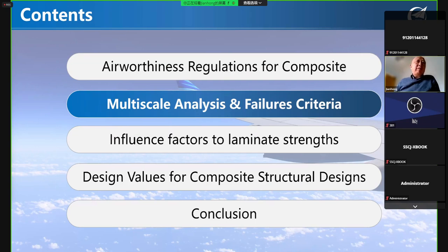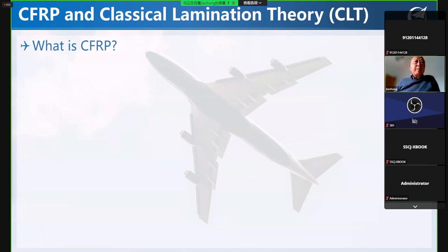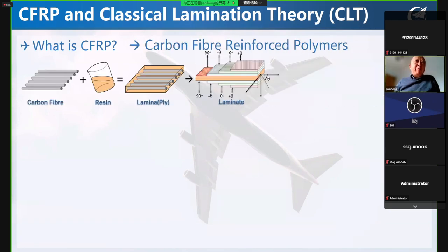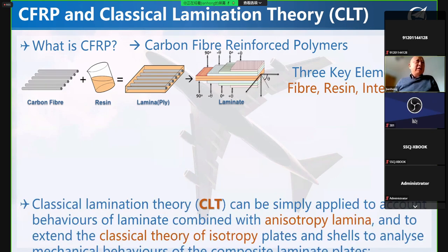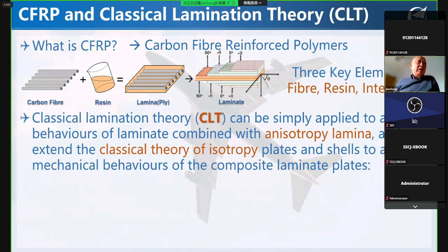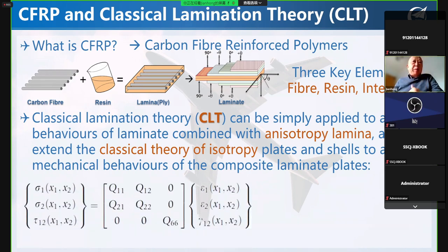Turning to multi-scale analysis and failure criteria — what are composites? Composites, carbon fiber reinforced polymer, are simply carbon fibers plus resin to generate a lamina. With combinations of different stacking sequences, we get laminates. There are three key elements: the fiber, the resin, and the interface between fiber and resin. People transfer the isotropic classical theories to anisotropic lamina using classical lamination theory to analyze isotropic material behavior.